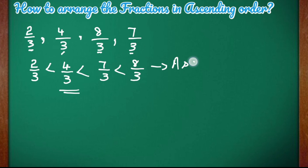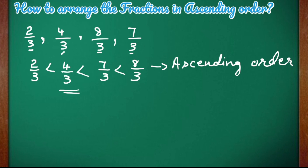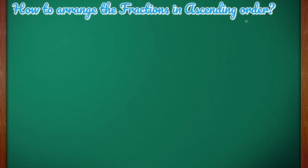If the denominators are same, the fraction with the smallest numerator is the smallest fraction. So here 2 by 3 is the smallest fraction, and the fraction with the greatest numerator is the largest fraction — that means here 8 by 3 is the largest fraction.